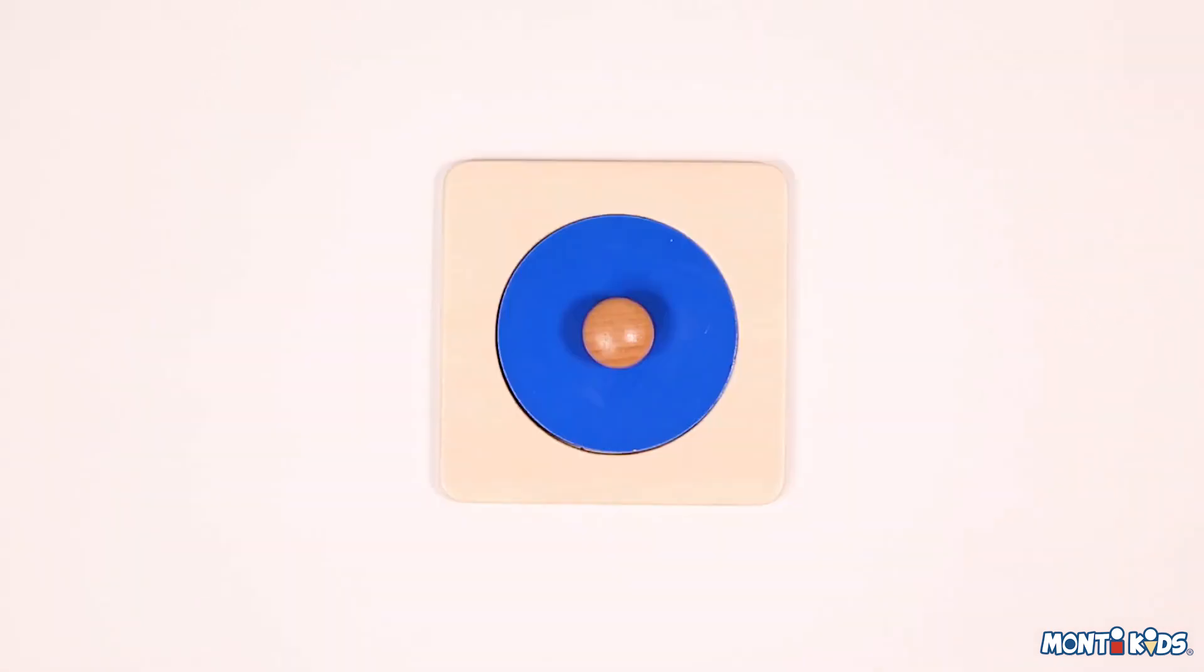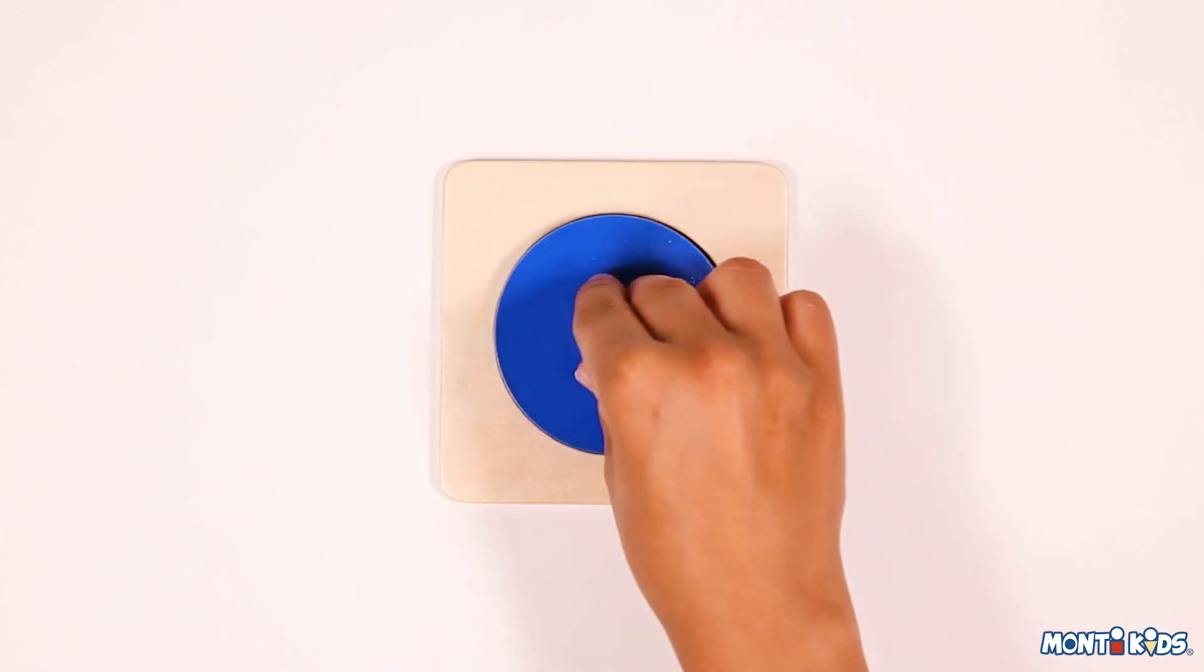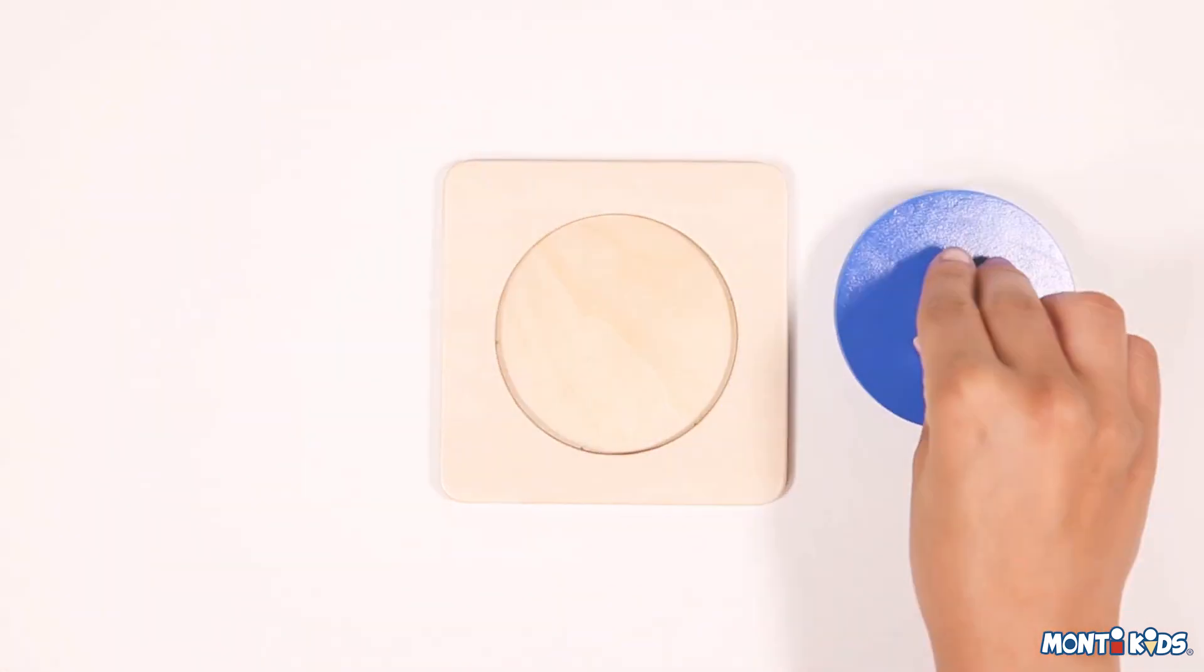This helps her to place it in successfully. Take the circle out again, then invite your child to have a turn.